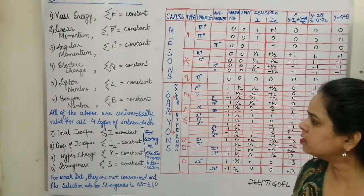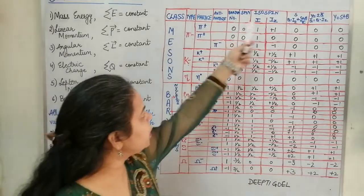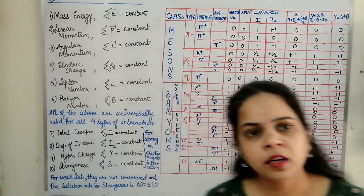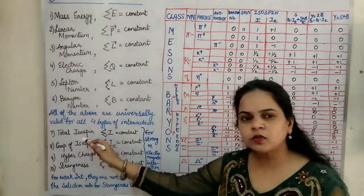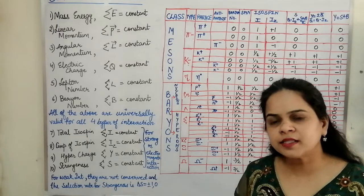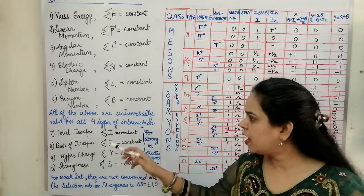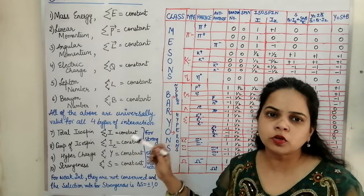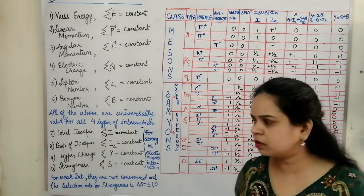There are also certain other conservation laws. Next we talk about total isospin. As seen in the table, we have already calculated the isospin, total isospin, and the z-component of the isospin. For total isospin, the sum of isospins on the reactant side must equal the sum on the product side — the summation of total isospin is constant. This is always conserved for the strong and electromagnetic interactions, but for the weak interaction, total isospin is not conserved.